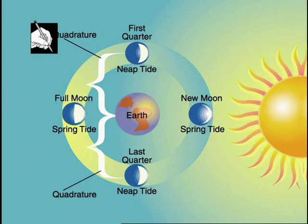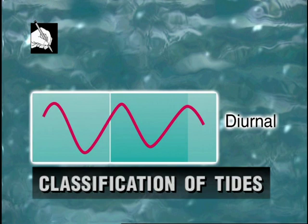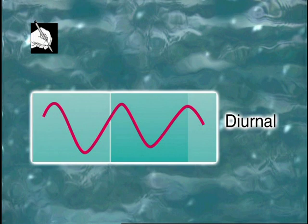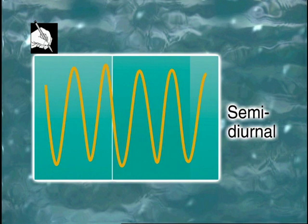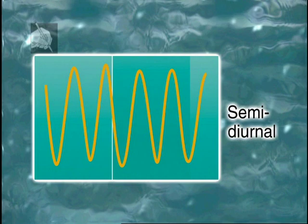Note that spring in this context has nothing to do with the seasons. Diurnal, or daily, means one high and one low tide occurring every 24 hours and 50 minutes — the time required for the moon to pass a fixed point on the earth twice. Semi-diurnal, or twice daily, means two high and two low tides of approximately equal height every 24 hours and 50 minutes, with a tidal change occurring approximately every 6 hours. Mixed is a combination of diurnal and semi-diurnal where the heights are unequal.